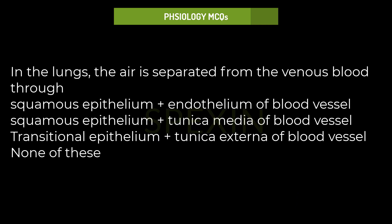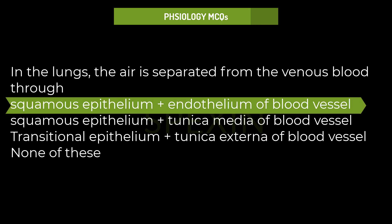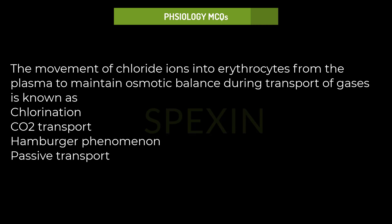In the lungs, the air is separated from the venous blood through: Squamous epithelium and endothelium of blood vessel, Squamous epithelium and tunica media of blood vessel, Transitional epithelium and tunica externa of blood vessel, None of these. Correct answer: Squamous epithelium and endothelium of blood vessel.